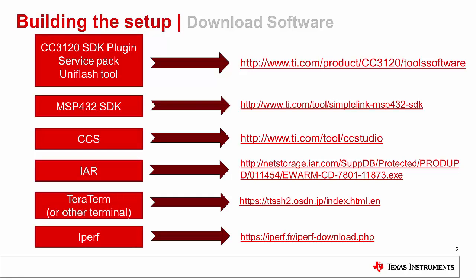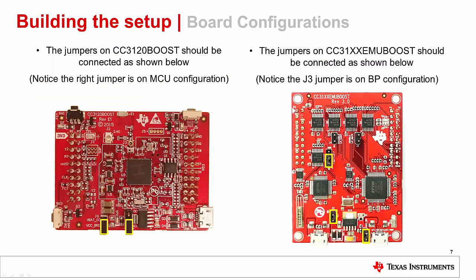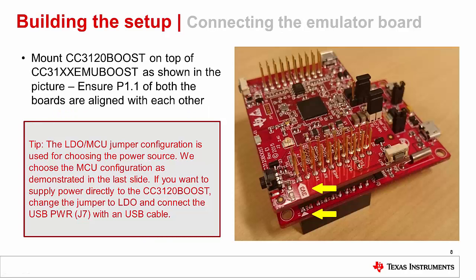The software components mentioned in the previous slide can be obtained from the provided links. This tutorial assumes that these packages are installed at their default location. On the CC3120 booster pack and CC31XX emulation booster pack, make sure you have the jumpers configured as shown. Mount the CC3120 booster pack on top of the CC31XX emulation booster pack, making sure the alignment is correct by matching the white triangles on both boards.